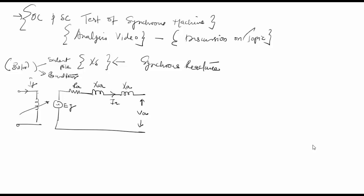Now, if I am open circuiting this then my VA is equal to VOC and during open circuit IA will be equal to zero.